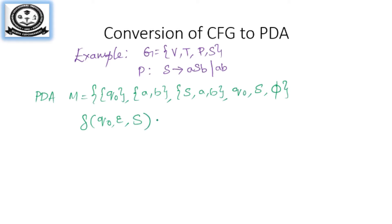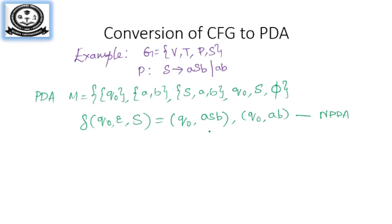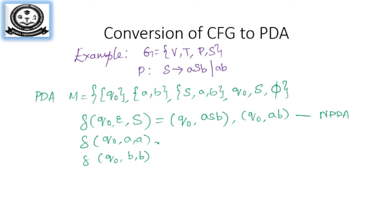We write the transition: τ(q0, ε, S) = {(q0, aSb), (q0, ab)}, since S has two productions. We can see this is a non-deterministic PDA since from a single state with the same input S it has two transitions. For the terminal symbols: τ(q0, a, a) = (q0, ε) which is a pop, and τ(q0, b, b) = (q0, ε) which is also a pop.